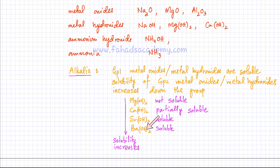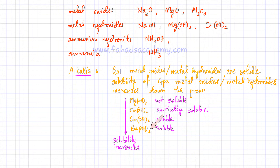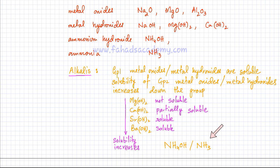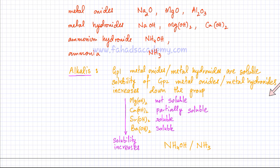Some Group 2 metal oxides and metal hydroxides are soluble. Magnesium hydroxide is not soluble, so it can't be called an alkali. Calcium hydroxide is only very slightly soluble. Strontium hydroxide and barium hydroxide are soluble and can be referred to as alkalis. Ammonium hydroxide and ammonia are both easily soluble in water — although ammonia is a gas, it dissolves quickly and forms ammonium hydroxide — so both can also be classified as alkalis.